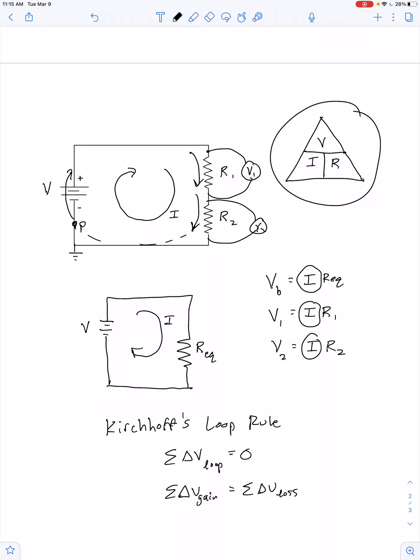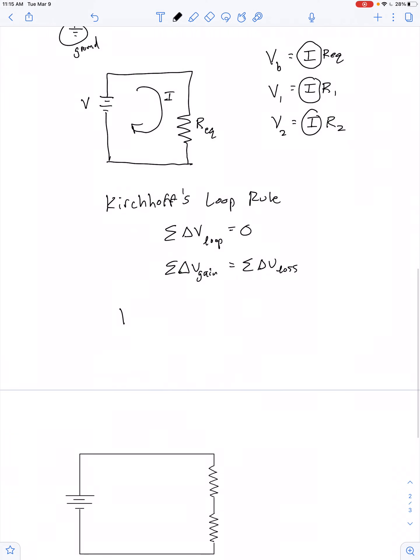We're back to point P. We've made our way all the way around the loop, and the net change in voltage has to be zero if we're back to the same value of electric potential. So, all we're saying is the voltage gained by the battery has to equal the voltage drop across resistor number one plus the voltage drop across resistor number two.